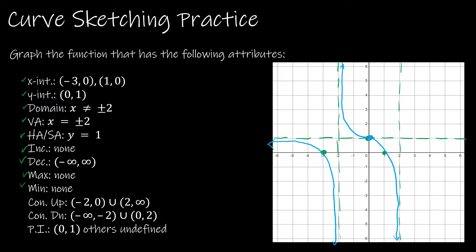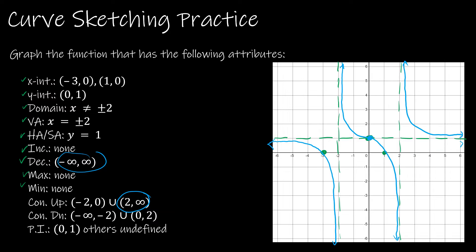Now let's look at the last interval from 2 to infinity. From 2 to infinity, it's concave up and decreasing. So the graph is up here, concave up and obviously decreasing. You might ask how I knew it goes up there and not below — well, below would be concave down and increasing, which contradicts the given attributes. So it has to be in the top section. That completes our first practice.